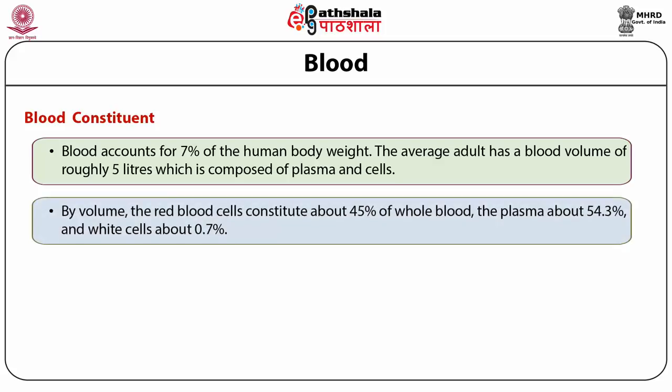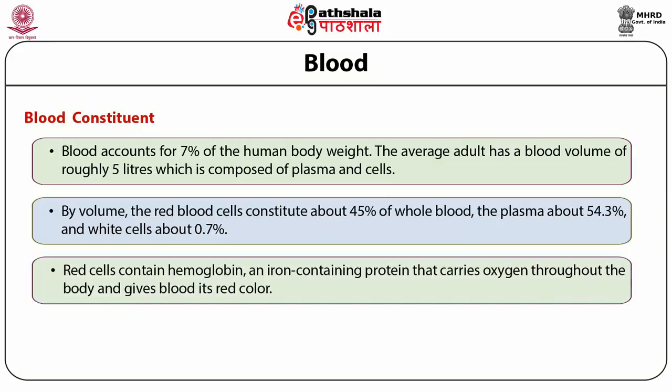By volume, red blood cells constitute about 45% of whole blood, plasma about 54.3%, and white cells about 0.7%. Whole blood contains red blood cells, white cells and platelets suspended in plasma. Plasma is the liquid portion of the blood that carries platelets, red cells and proteins through the body.